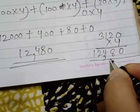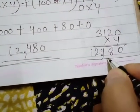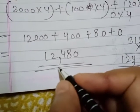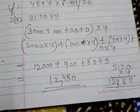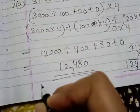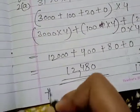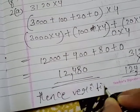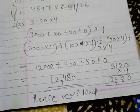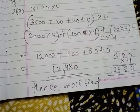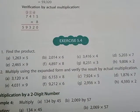Your actual multiplication is 12,480 and expanded multiplication is also 12,480. This proves that our solution is correct. Here we will write: hence verified — meaning yes, our solution is correct. Like this we have to do the rest of the questions also.